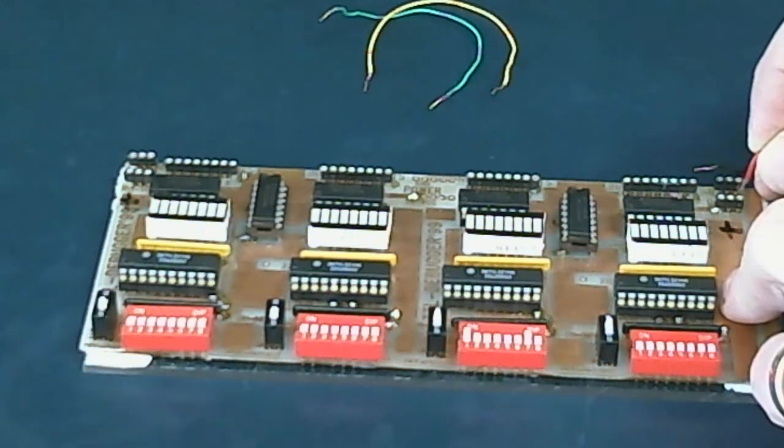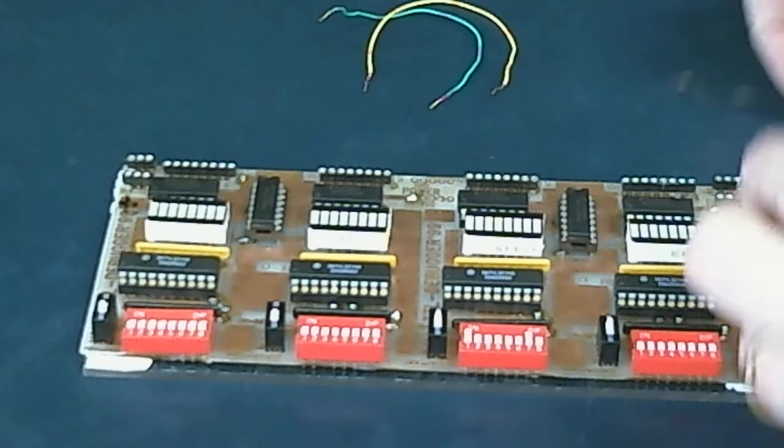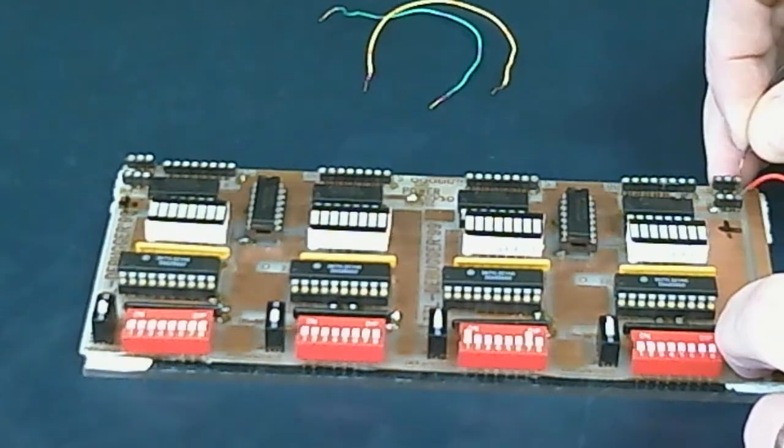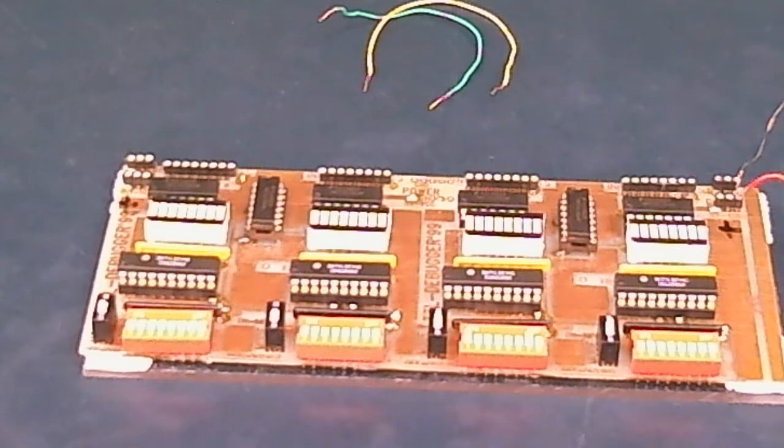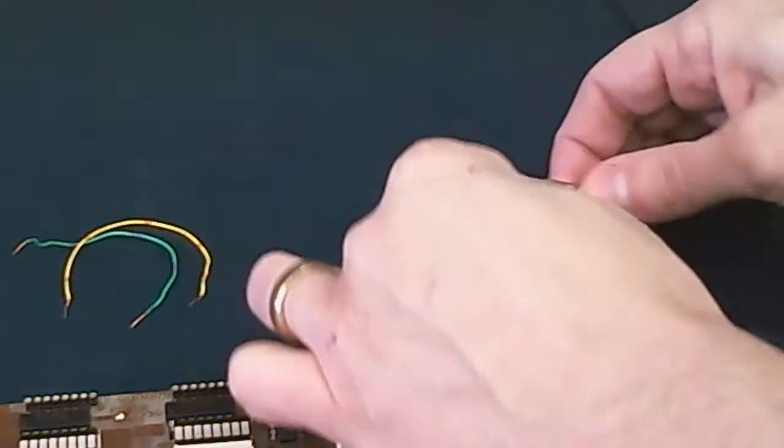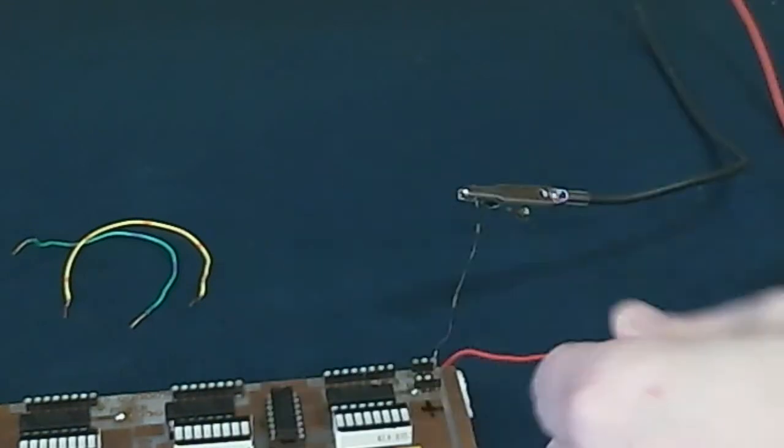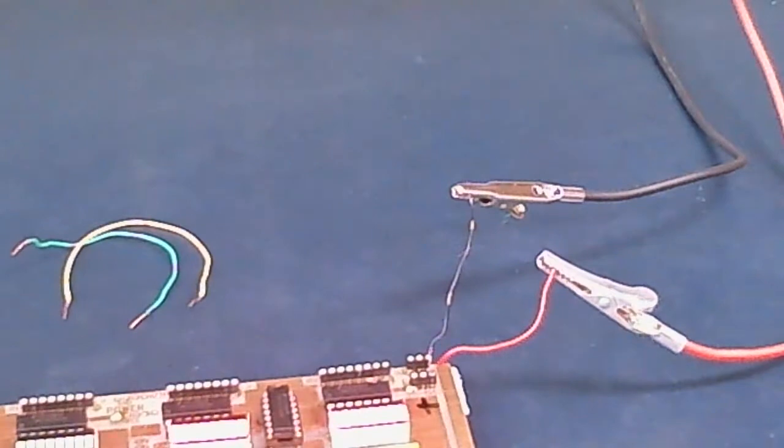So we'll put a red wire for power—we always use red for power—and a black wire for ground. We always use black for ground. And then we will connect these to a black lead here and a red lead here.